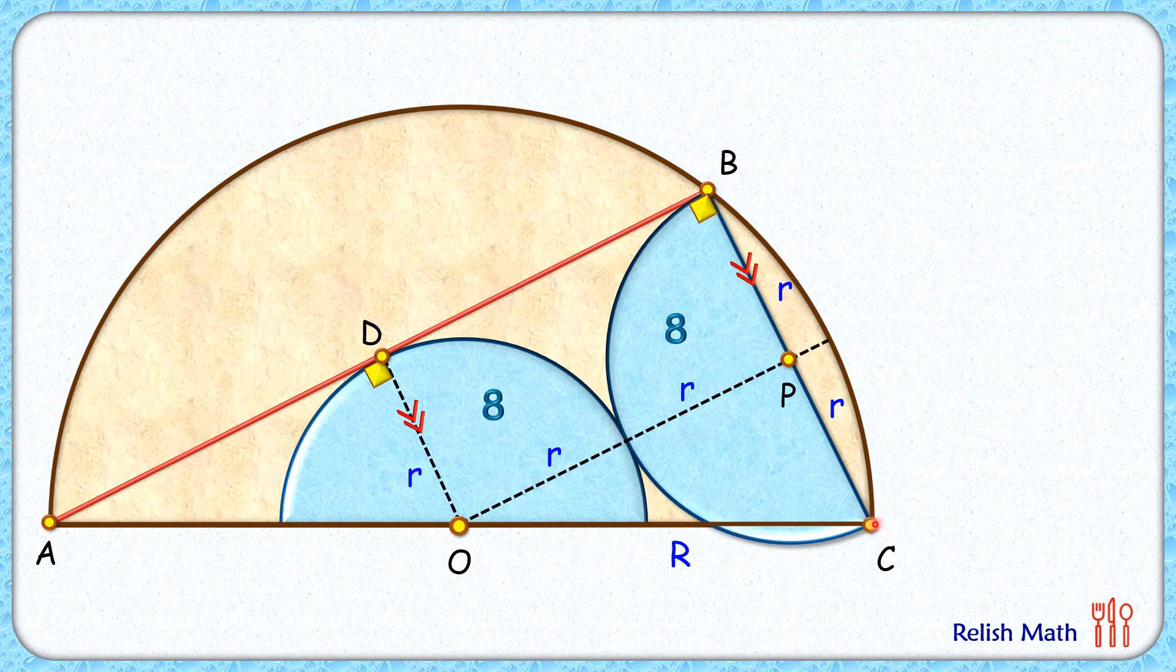So this angle here is 90 degrees, and thus triangle POC is a right-angle triangle at point P. Applying Pythagoras theorem, capital R² equals (2r)² plus r², or we can say that capital R² = 5r².